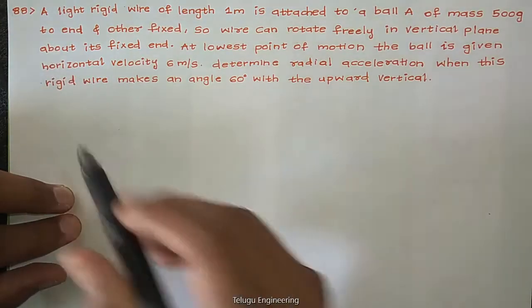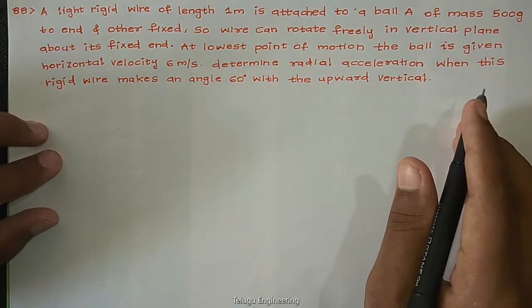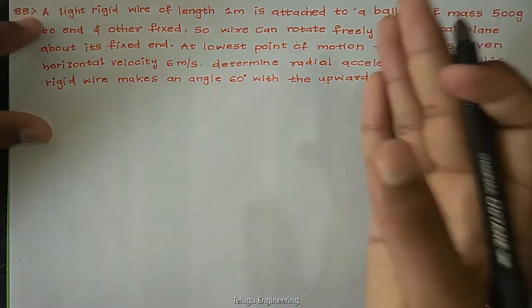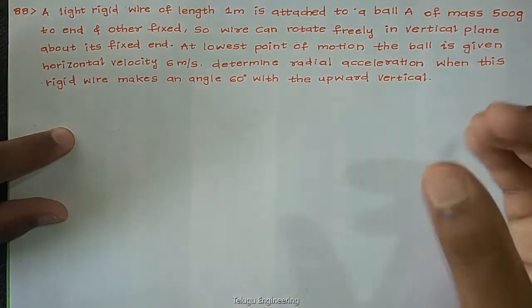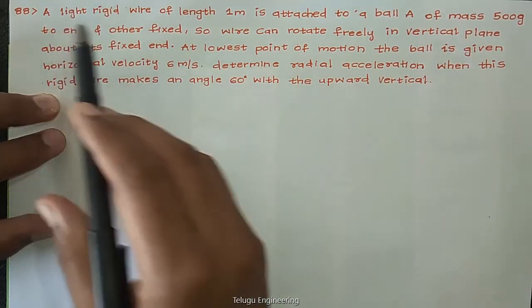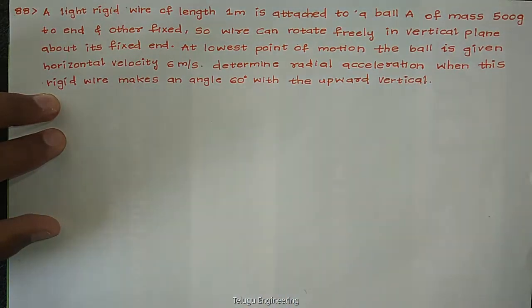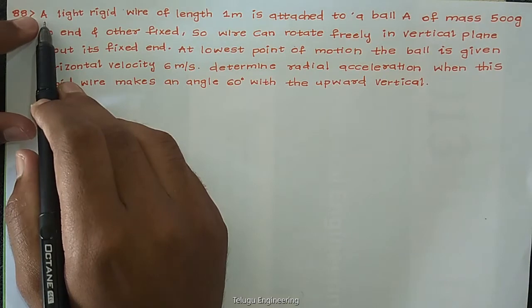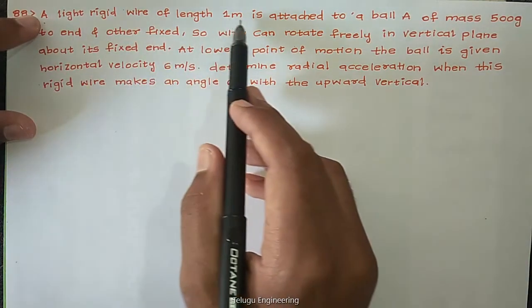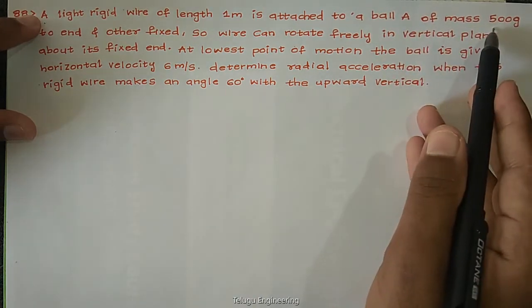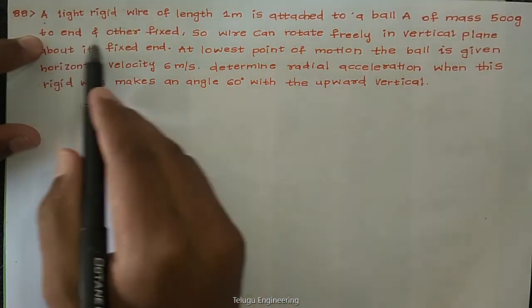This is the 88th question. Our physics questions continue from 80 to 120, and this is the 88th question. The question is relatively big, but if we split it into parts and understand it, it will be a very easy task. The question is: a light rigid wire of length 1 meter is attached to a ball A of mass 500 grams at one end, and the other end is fixed.